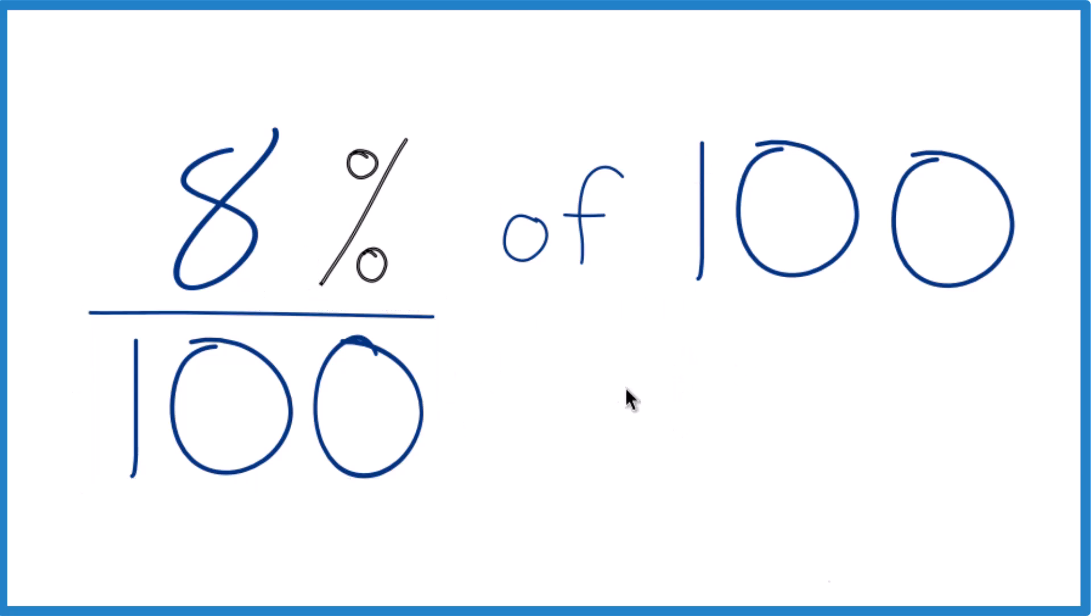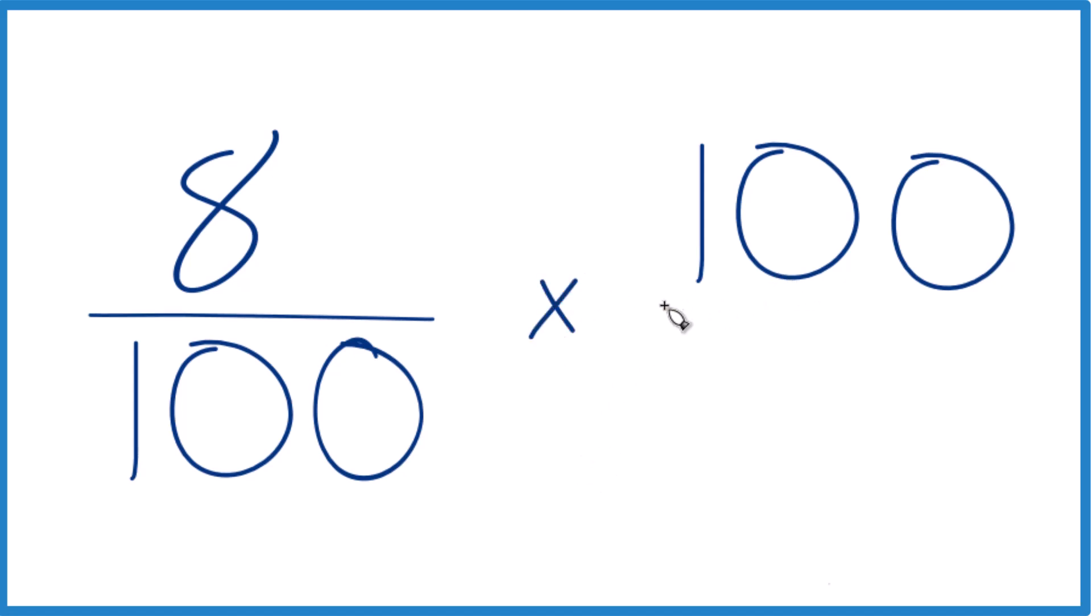But another way to think about this is you could take your 8 over 100, so now you have a fraction. Instead of 'of', we're just going to multiply, and we're going to multiply it by 100, but we're going to call it 100 over 1. It's still 100, but now everything lines up.